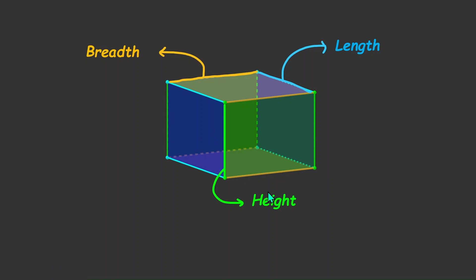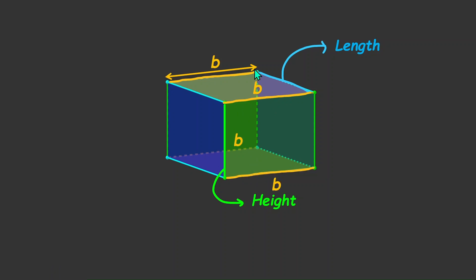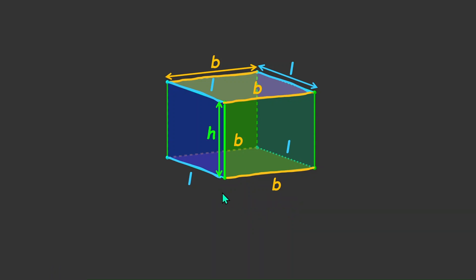In this cuboid, all the yellow lines have the same length — that is, the breadth B. All of the yellow lines have the same length B. Similarly, if the blue lines indicate length L, then all of the blue lines here and the one behind would be L. All the green lines would be H, standing for height. So this is our height H, and these are the dimensions of a cuboid.